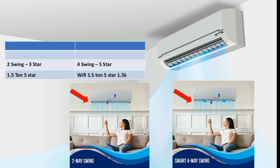Now let's look at the pros and cons of this AC. An advantage is that the 1.5-ton 5-star model comes with 4-way swing — up, down, left, and right — which is a great feature. However, a disadvantage is that the 1.5-ton 5-star model does not have Wi-Fi support. The 1.5-ton 3-star model also lacks Wi-Fi. Only specific models with 2 wings support Wi-Fi. That is the second minus point of this AC.